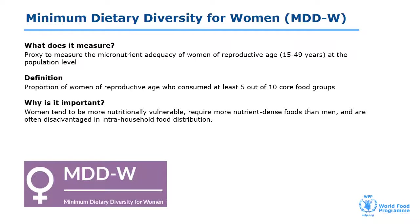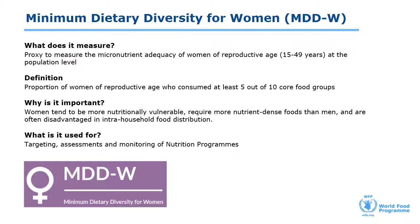This is important because women tend to be more nutritionally vulnerable, require more nutrient-dense foods than men, and are often disadvantaged in intra-household food distribution. Therefore, MDDW is an important indicator used for targeting, assessment and monitoring of programs focused on improving nutrition. It's also WFP's corporate indicator to monitor progress towards our micronutrient programs, stunting prevention programs, and other nutrition-sensitive programs.